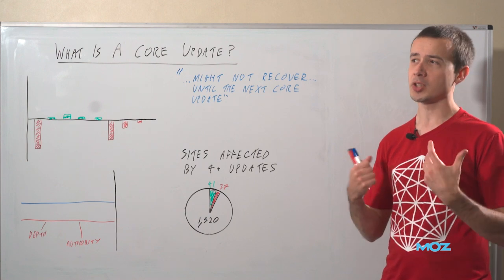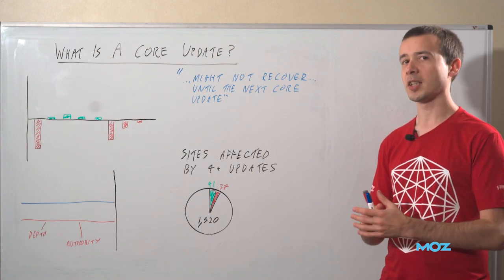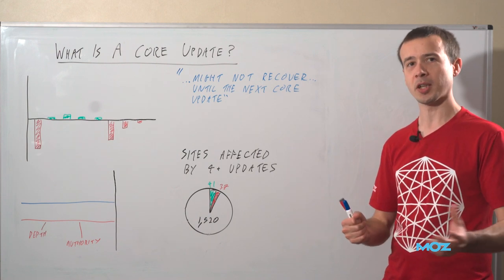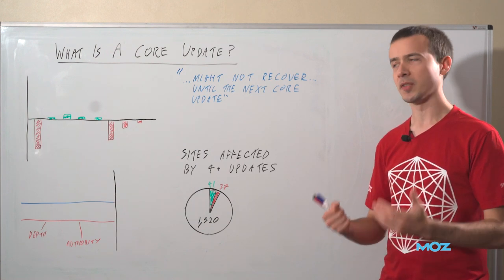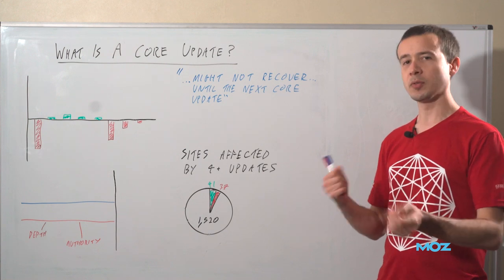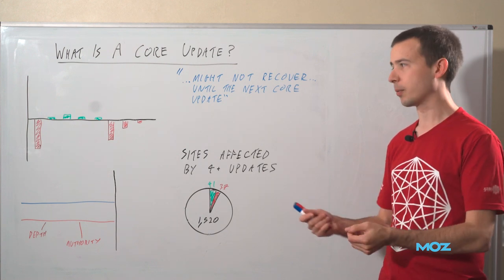Then you have core updates where they do say things, but they tend to be kind of saying the same thing every time. So every single core update they've said, make good content, work on your expertise, authoritativeness, trust. And this isn't very concrete. It's not very specific about what they've changed this particular time.